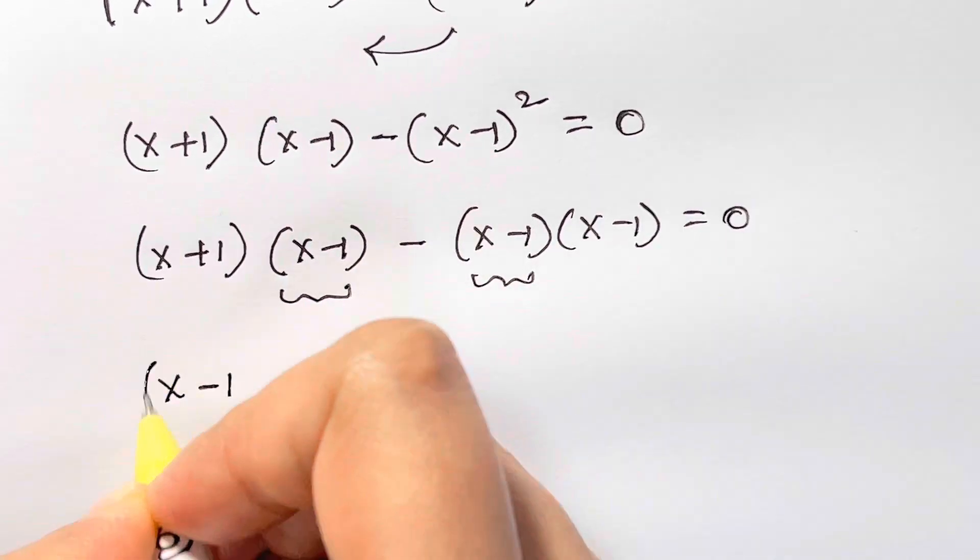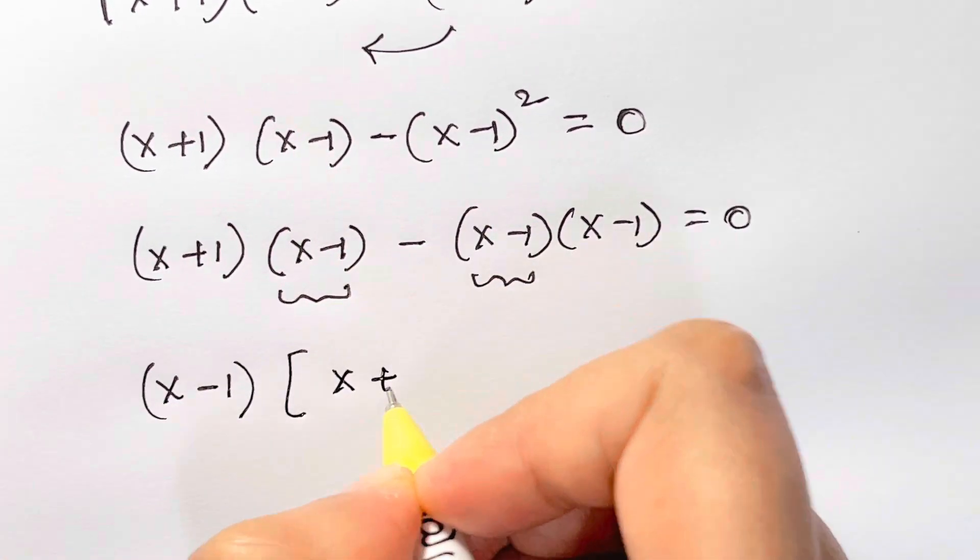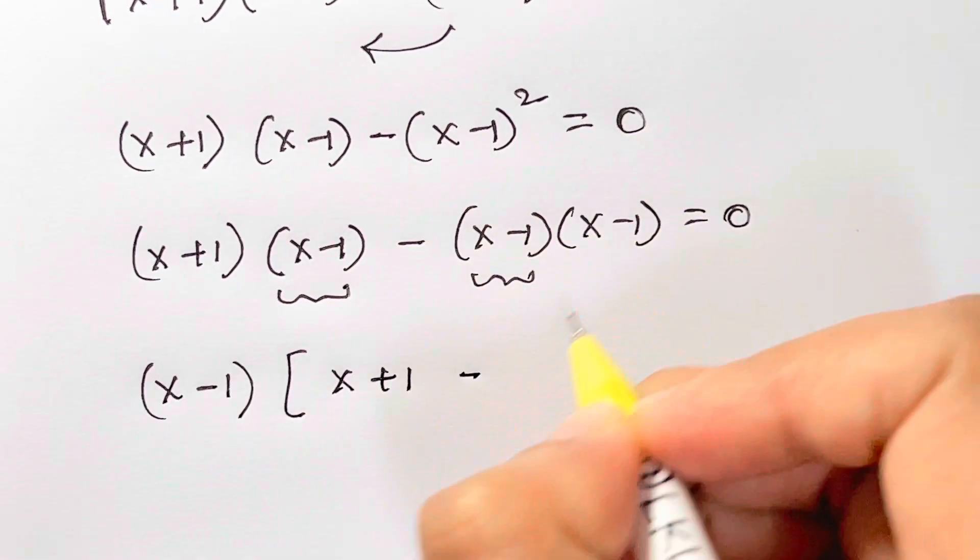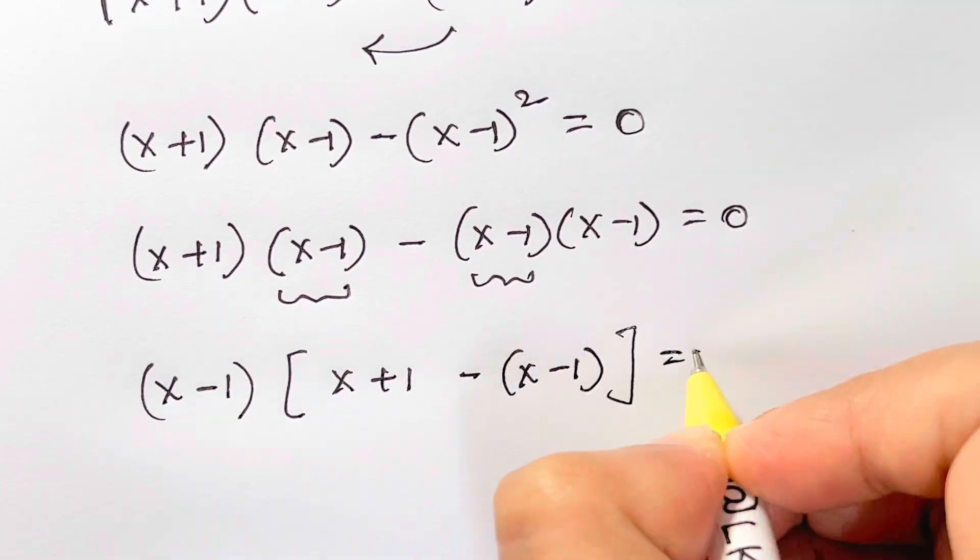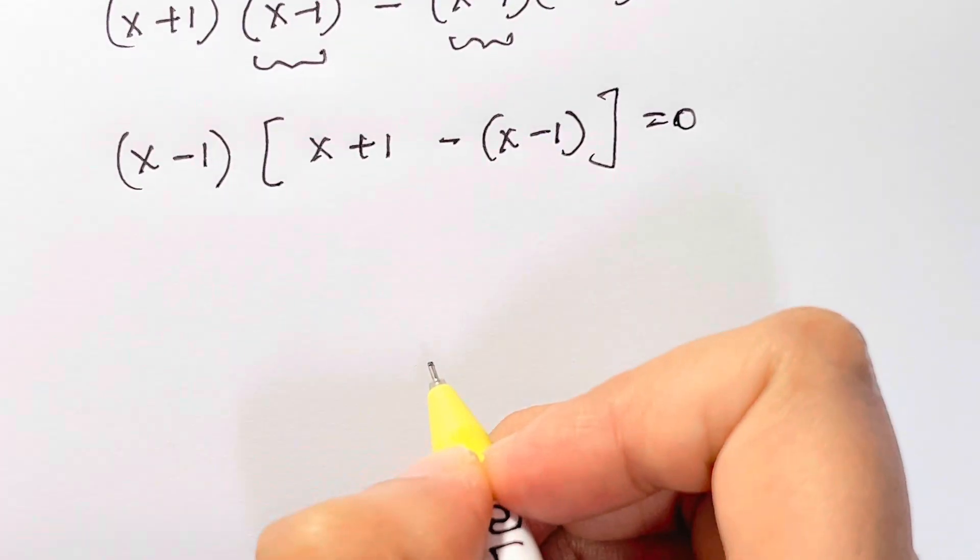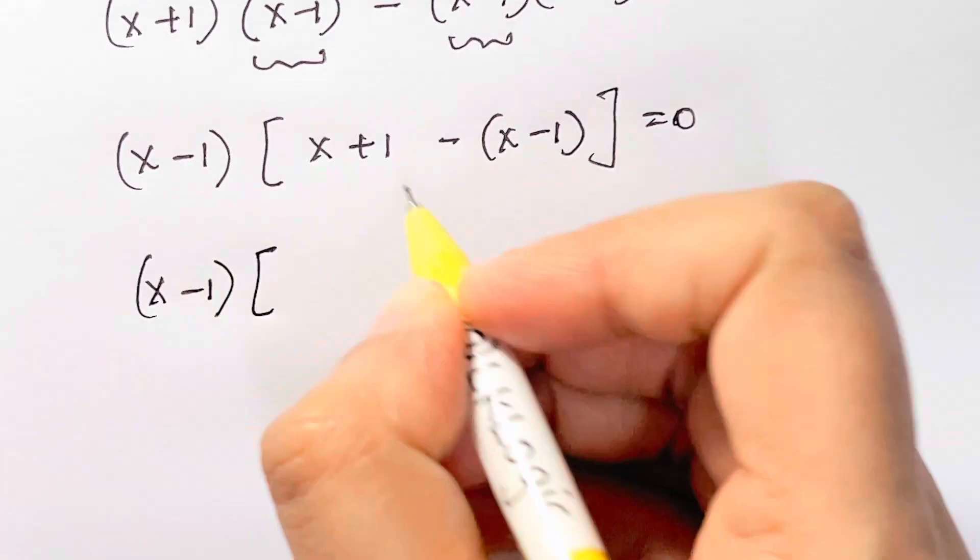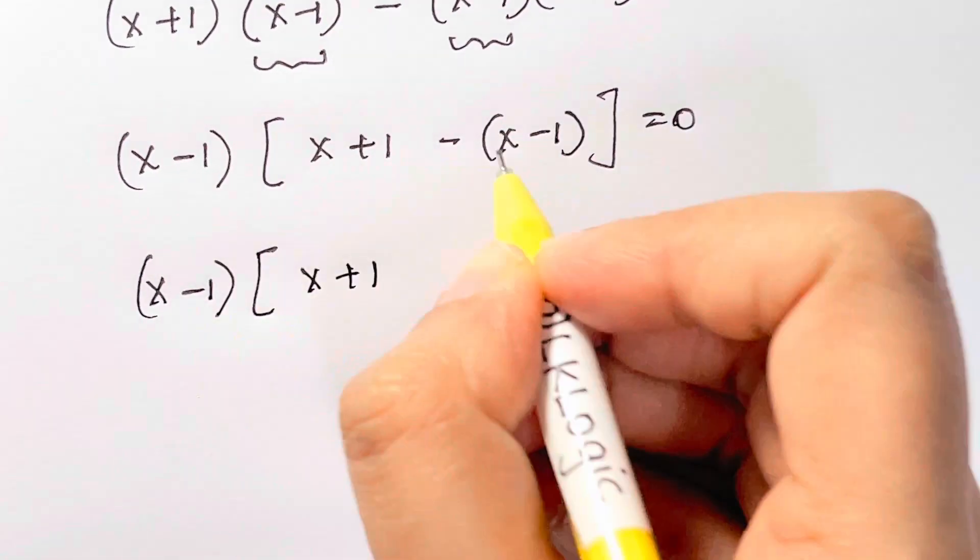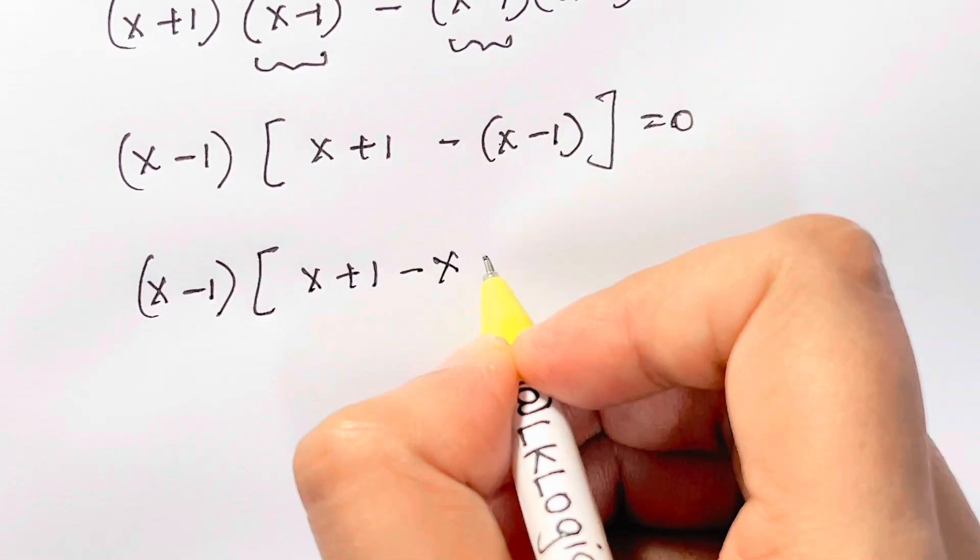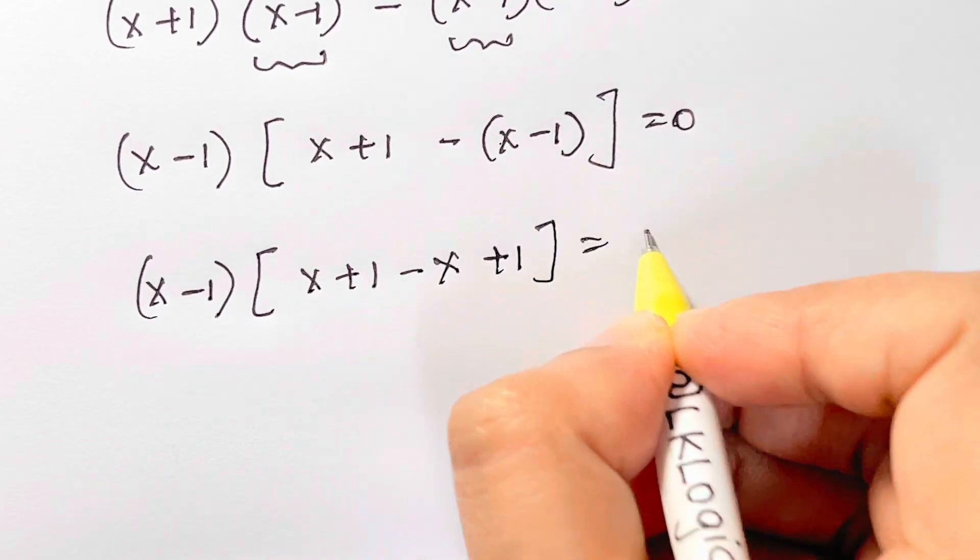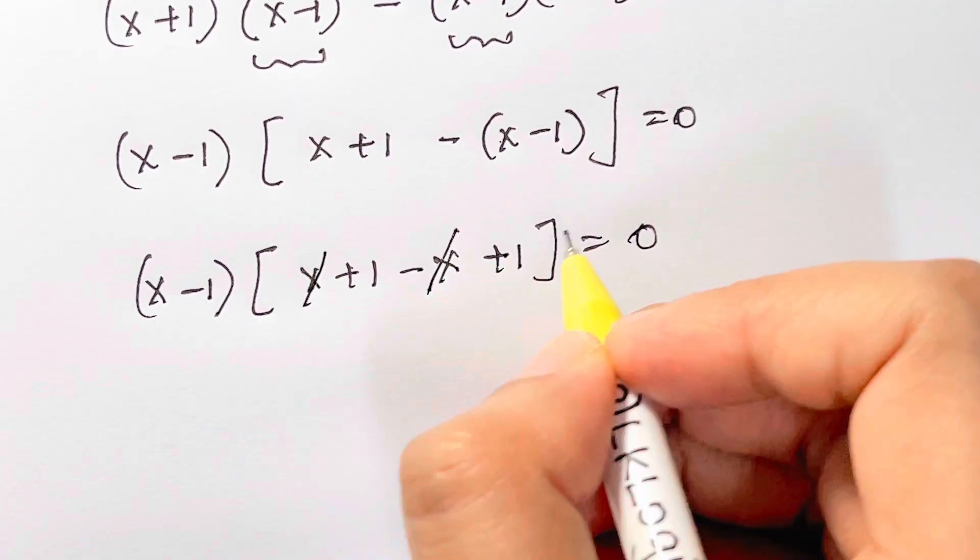So x minus 1, if I take out common, what am I left with? x plus 1 minus x minus 1 is equal to 0. Now x minus 1 times, x plus 1 minus into plus, minus x minus into minus plus 1 is equal to 0. Plus x minus x gets cancelled here. You're left with 2.